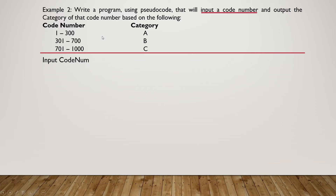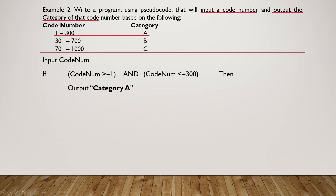Then we need to output the category of that code number by checking which category it falls in. We check firstly if the code number falls in category A, that is between 1 and 300. We check: if code_number >= 1 AND code_number <= 300, then output 'category A.' Both conditions must be satisfied since we are using the AND logical operator.